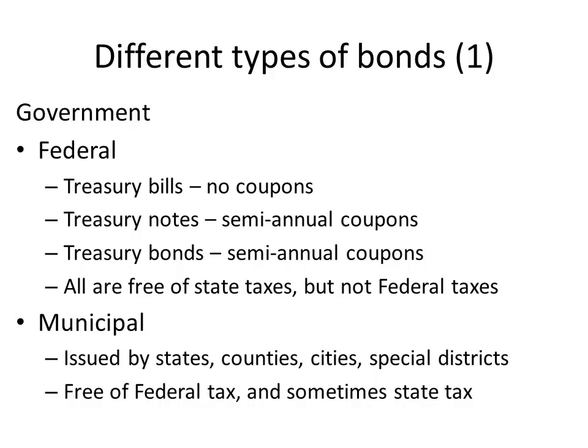Who issues municipal bonds? Anything smaller than the federal government: states, counties, cities, special districts like road districts, sewer districts, and water districts. At the city, county, and special district level, the money is typically used for building highways or schools. School districts can also issue municipal bonds. For example, the new power plant southwest of Springfield is being built by City Utilities — owned by the city of Springfield — and is therefore able to issue municipal bonds. That new power plant is being built with $65 million in newly issued municipal bonds.